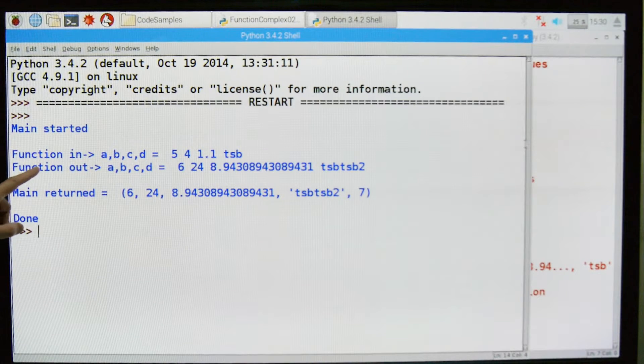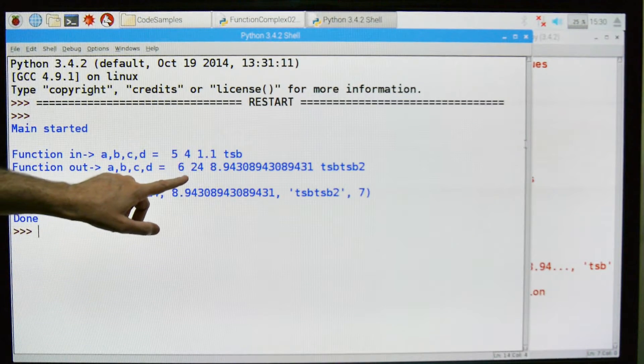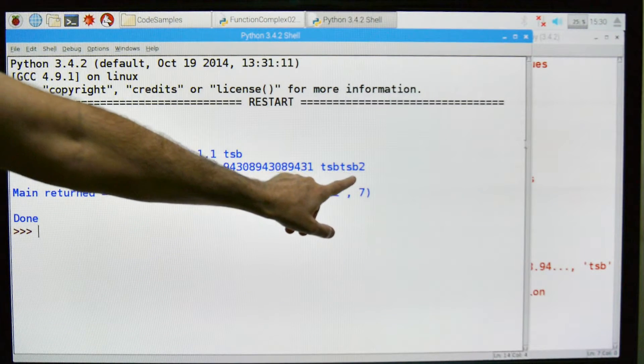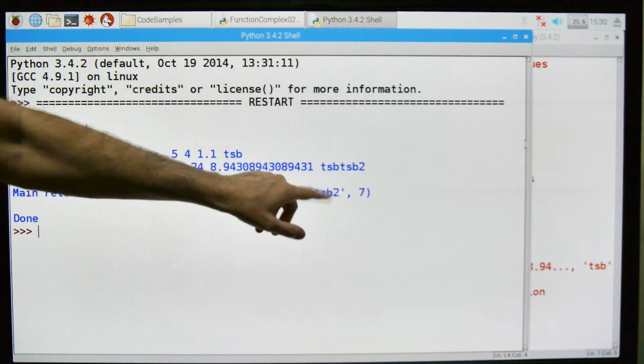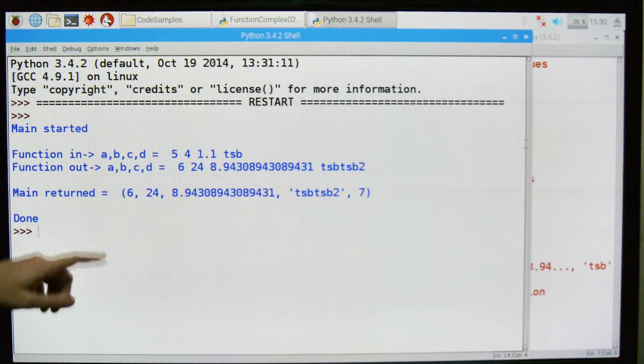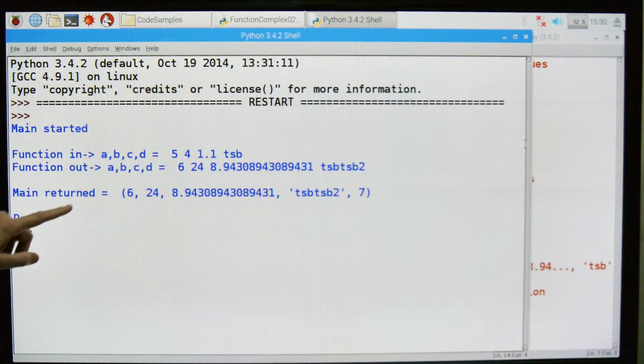Then we do our calculations and all that stuff. So here are the results from our calculations, 6, 24, the 8.94, etc. And then we concatenated an extra TSB2 onto the original TSB. So that's what's being, that's what's happened by the end of the calculations in the function.